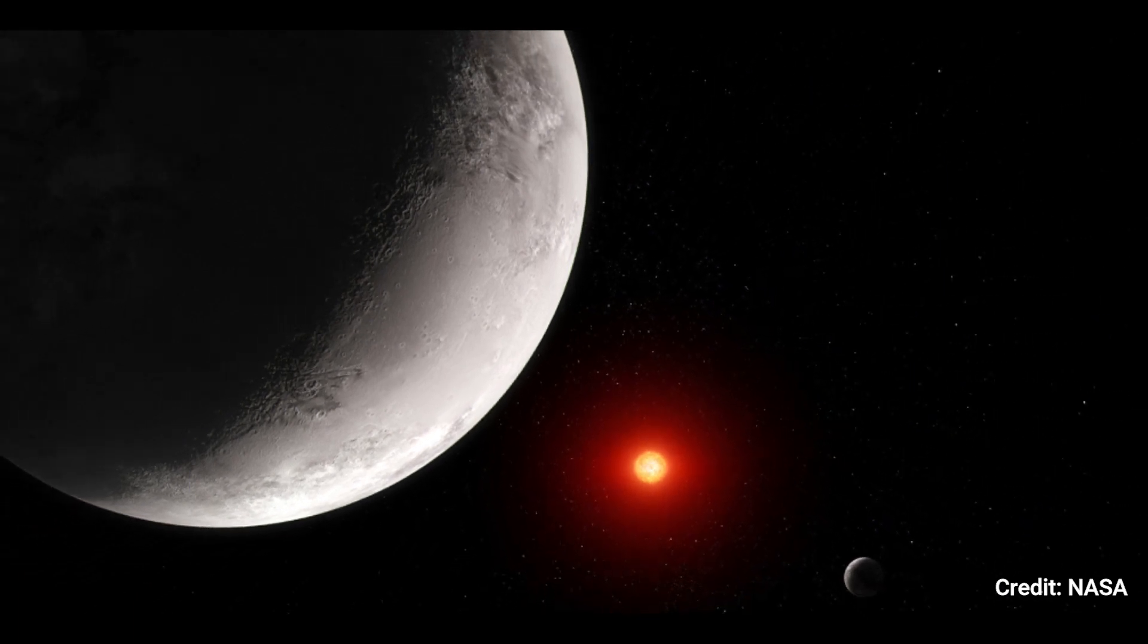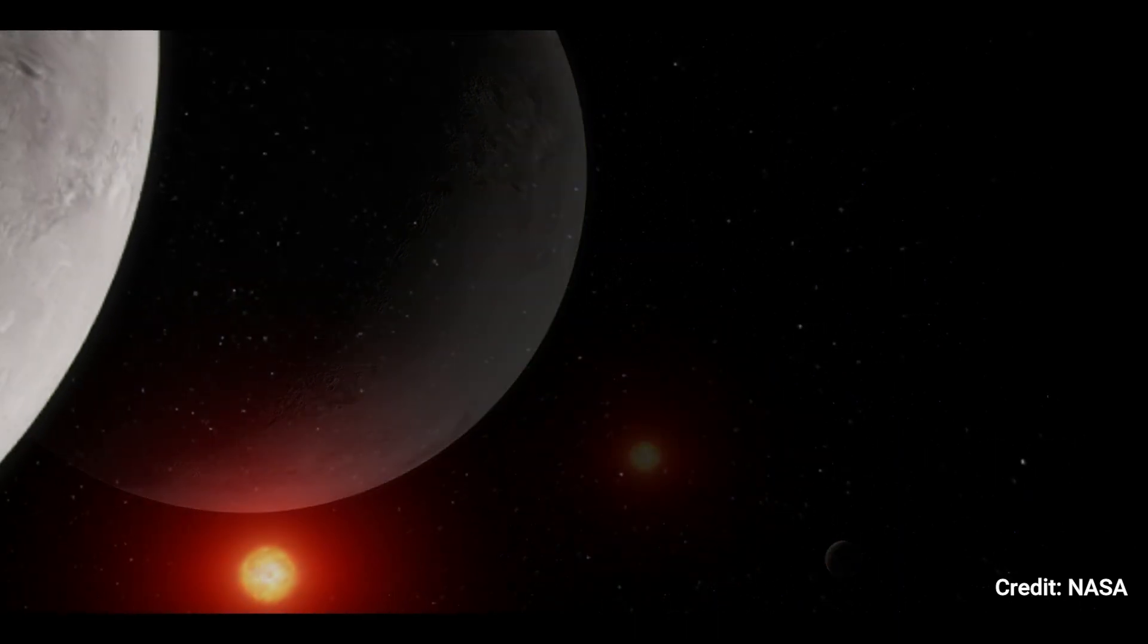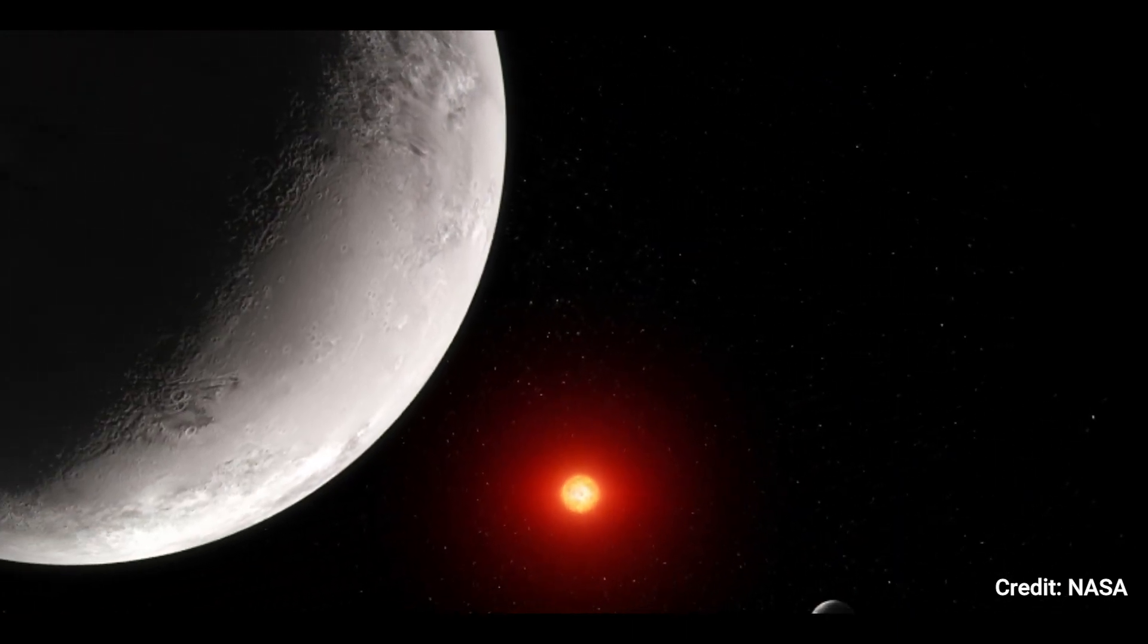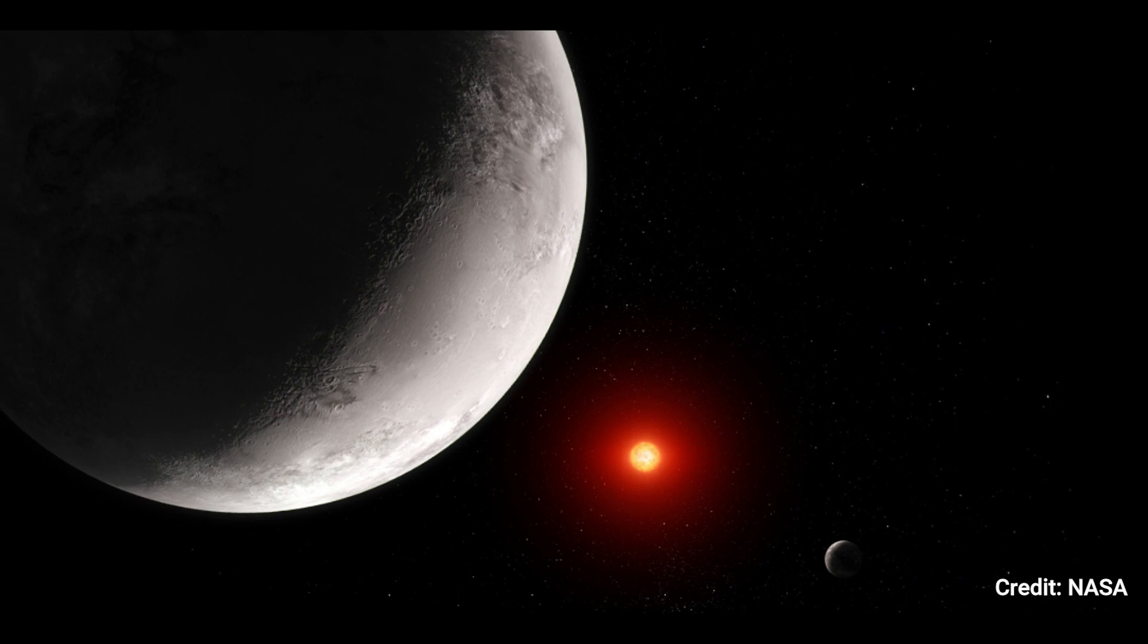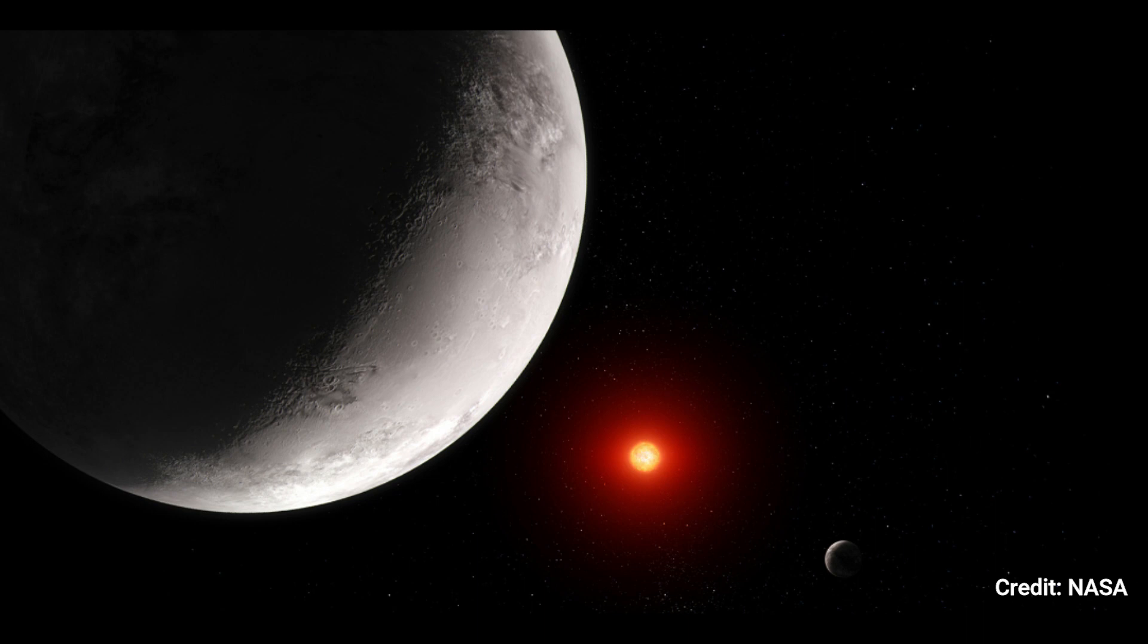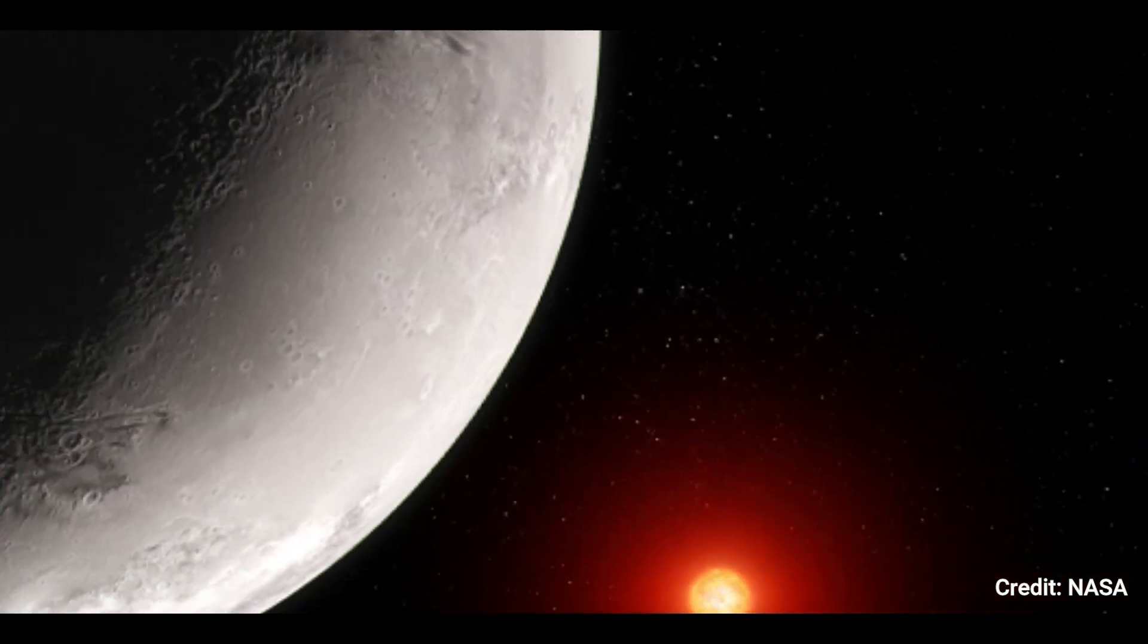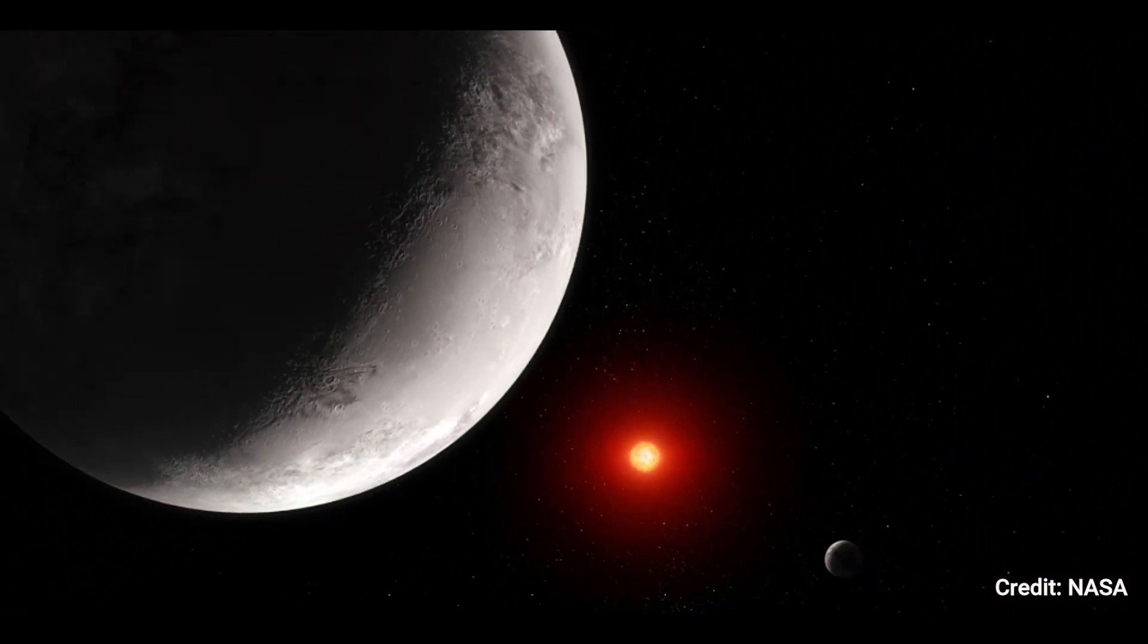Webb's analysis of TRAPPIST-1c's 15 micron mid-infrared light shows that the planet has either a bare rocky surface or a very thin carbon dioxide atmosphere. TRAPPIST-1b, the TRAPPIST-1 system's innermost planet, is depicted in the background. TRAPPIST-1b is equally rocky and appears to lack an atmosphere. TRAPPIST-1 is an ultra-cool red dwarf with a temperature of only 2,550 kelvins, around 4,150 degrees Fahrenheit, and a mass of only 0.09 times that of the Sun.